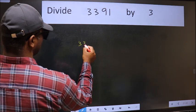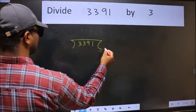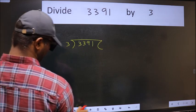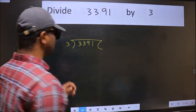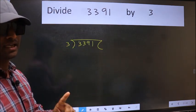3. 3391 and 3 here. This is your step 1.